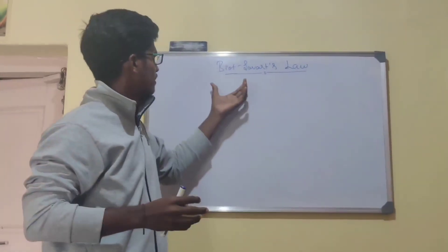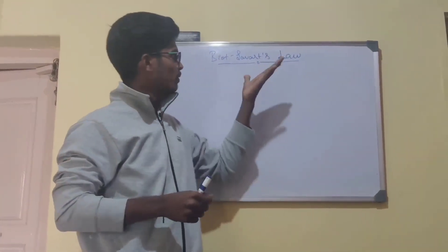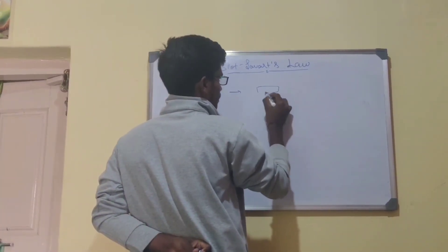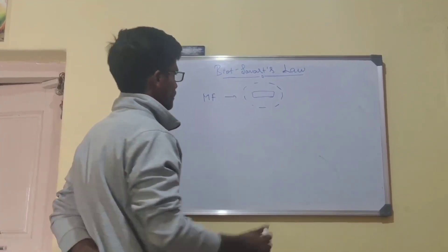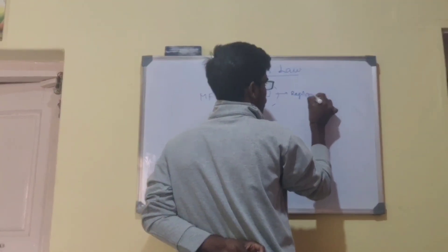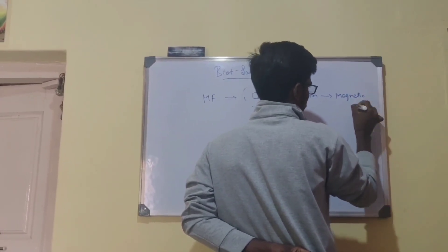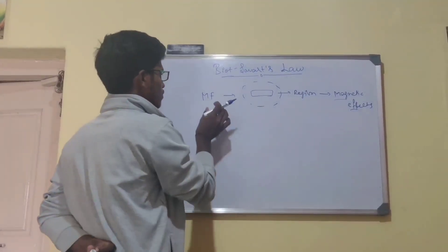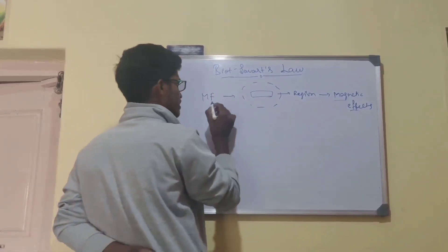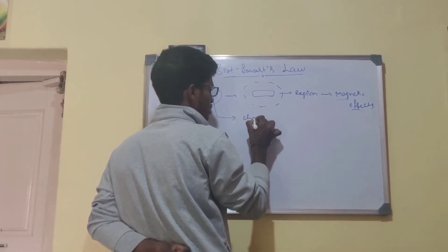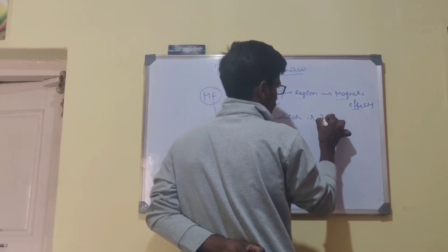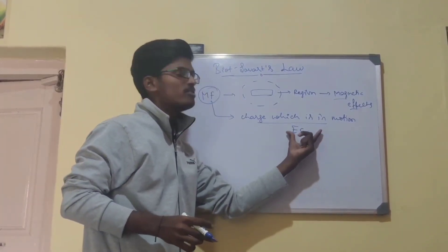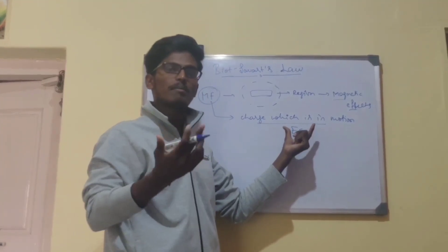In this video, we shall study about Biot-Savart Law. Before going to the concept of Biot-Savart Law, let me explain what a magnetic field is first of all. Basically, we know that a magnet produces a magnetic field around it. The magnetic field is the region where you are going to observe the magnetic effects. A magnet is one source of magnetic field, and another source is a charge in motion, or electric current. Electric current is also considered a source of magnetic field because a conductor carrying current will produce a magnetic field around it.